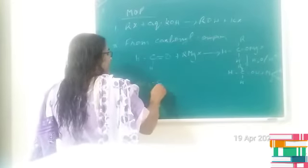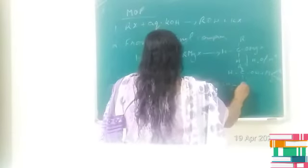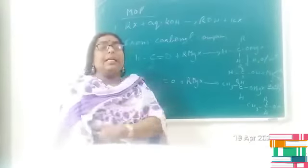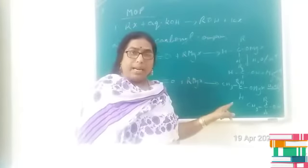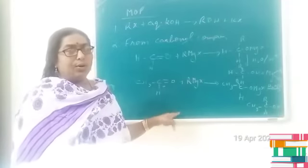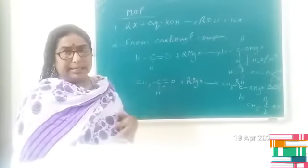If instead of methanal you use another aldehyde — for example ethanal (acetaldehyde) — it reacts with alkyl magnesium halide, undergoes acid hydrolysis, and you get CH₃CH(OH)R, which is a secondary alcohol. So methanal with a Grignard reagent gives primary alcohol, any other aldehyde gives secondary alcohol, and if you use a ketone you get tertiary alcohol as the product.